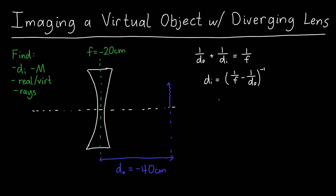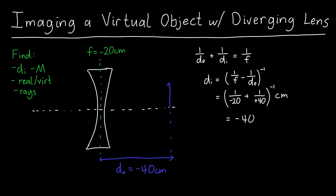We need to be very careful with the signs because we have a lot of minus signs floating around. The focal length is −20 cm, so we have 1/(−20), then we subtract 1/(−40), and that all has to be inverted, in centimeters. Subtracting a negative quantity makes both terms positive, and −1/20 + 1/40 gives −1/40, so the image distance is −40 centimeters.